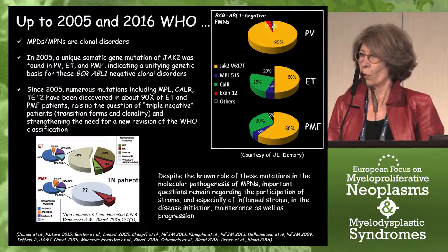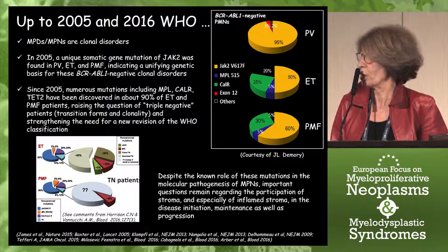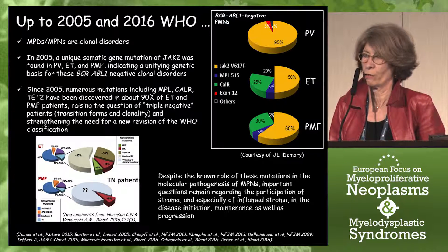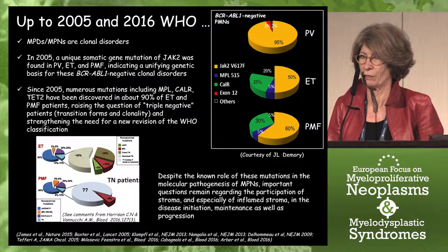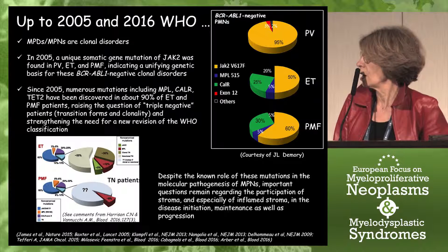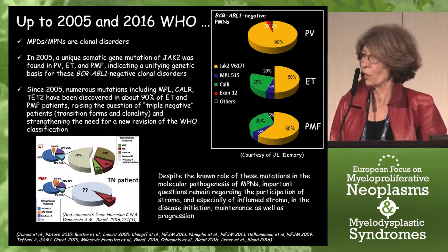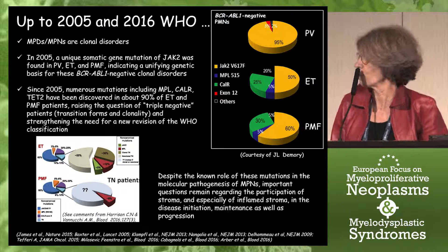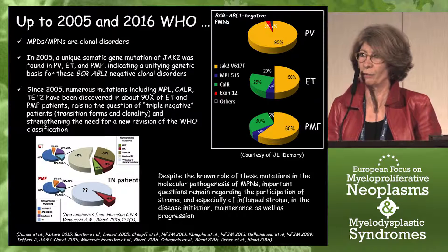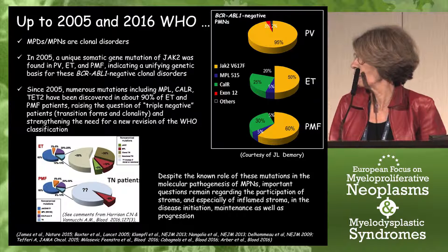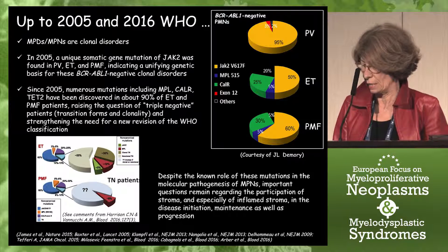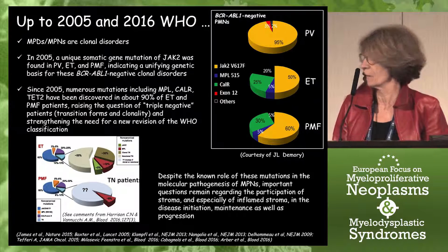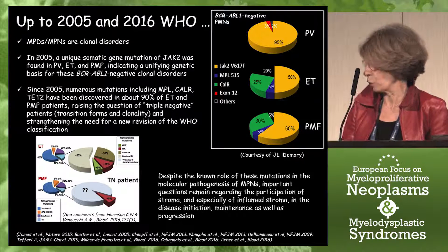Despite the well-known role of mutations in the molecular pathogenesis of myeloproliferative disorders, important questions remain concerning the role of stroma — and especially of inflammatory stroma — in disease initiation, maintenance, and progression.